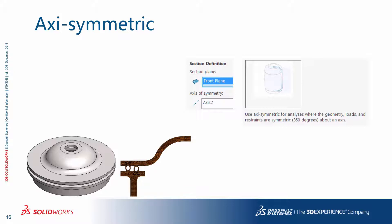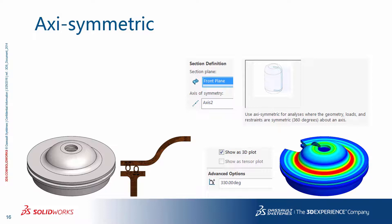You use an axisymmetric 2D analysis where the geometry, loads, and restraints are symmetric about an axis throughout 360 degrees. After creating the study, you define the cut plane and the axis of symmetry, and the program extracts the 2D cut section surface. For applying restraints and loads, you work with edges and vertices on the cut section. The formulation of the axisymmetric elements takes into account the expected behavior. At the post-processing level, you have the option of visualizing the plot in 3D by revolving the solution through some angle.